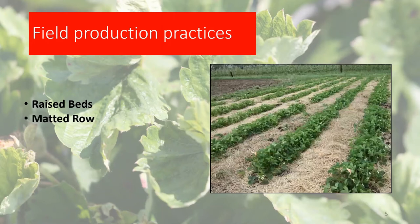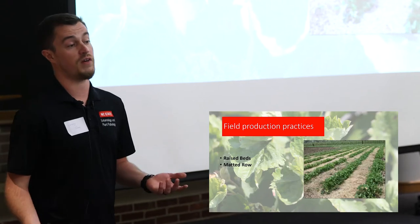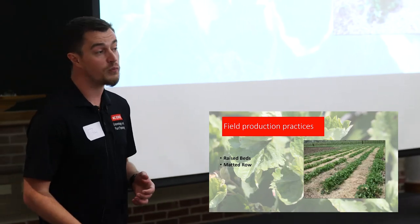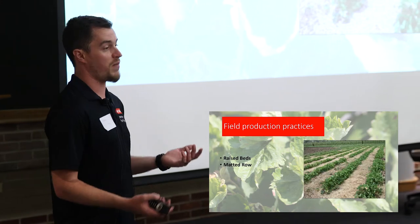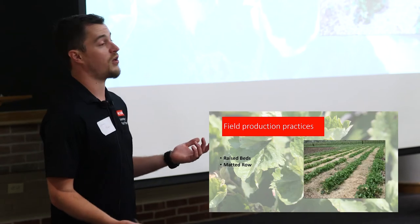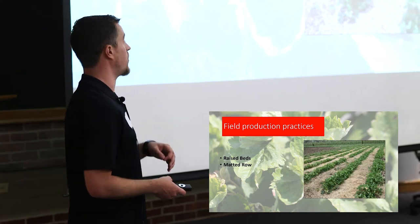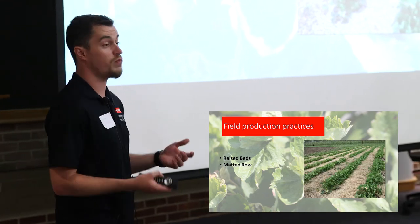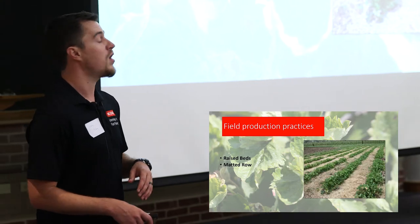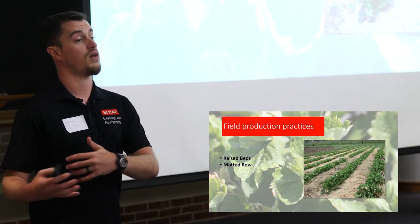In Pennsylvania, you see more matted row production. You plant in the spring, pick off the blooms, let the canopy build up, and let runners branch out to fill in a matted row. Once established, plants can fruit for several years with multiple flushes per year. You have lower production costs, though after a year or two you may face different pest pressures. Different varieties are used — annual crops use June-bearing varieties fruiting once, while ever-bearing varieties used in matted rows produce multiple flushes throughout the year.